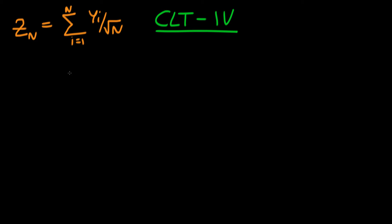In this video we're going to complete our proof of the central limit theorem using our standardized sample mean, which we found in the last video. We found our standardized sample mean as a sum of independent Y's, where each Y has a mean of zero and a variance of one. That's important because we've already found the characteristic function for a random variable with a mean of zero and a variance of one.